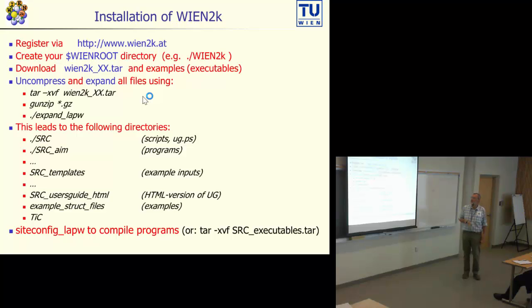When you want to get Wien2K, you have to register at our site online. Then you should create the WIENROOT directory, for instance /Wien2K. You download the tarball of Wien2K and also the examples most likely. You uncompress and expand these files according to this list, and then you get a list of programs. They all start with SRC_underscore and the name of the programs. Also some templates with example inputs are given on that site.